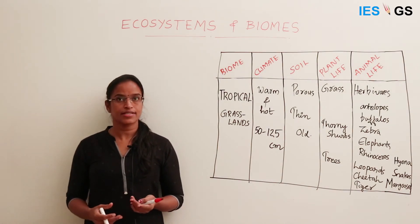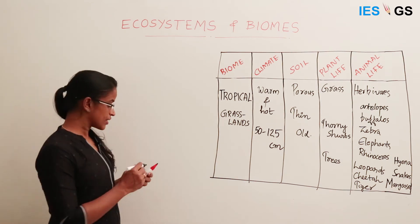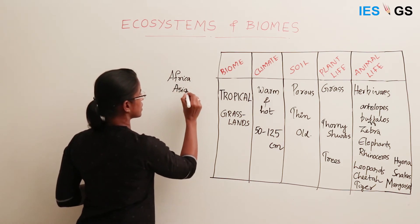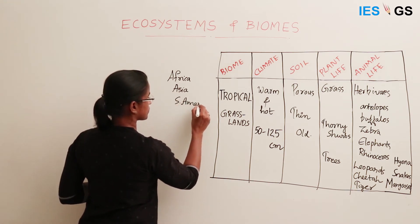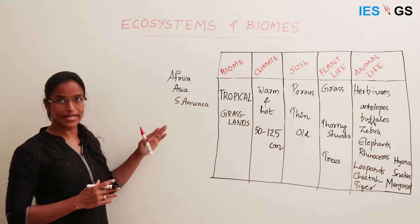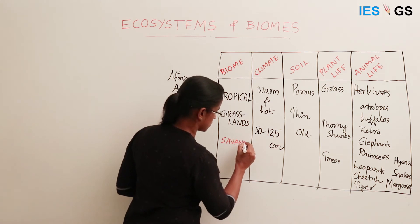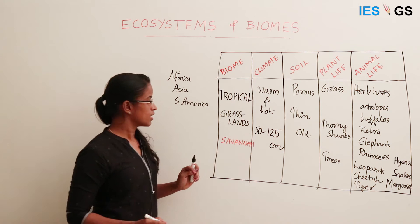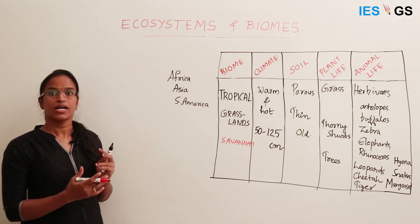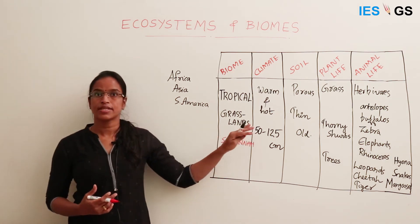Tropical grasslands are found in the tropical regions, mainly surrounding the tropical forest region. They occur in the continents of Africa, Asia, and South America. In these continents, tropical grasslands occur in great extent and are commonly called savannah. Savannahs is generally the name used for grasslands in the African continent, and similar grasslands in other continents also come under this category.